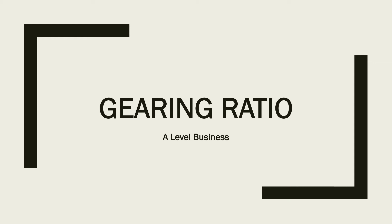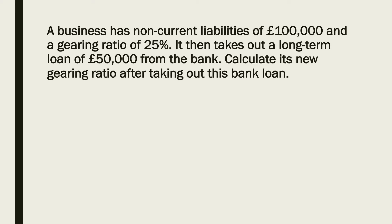Let's have a session on gearing ratio. This is for A-level business. A business has non-current liabilities of £100,000 and a gearing ratio of 25%. It then takes out a long-term loan of £50,000 from the bank. Calculate its new gearing ratio after taking out this bank loan.